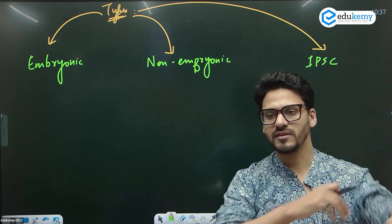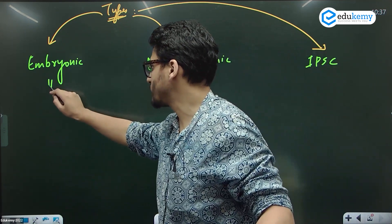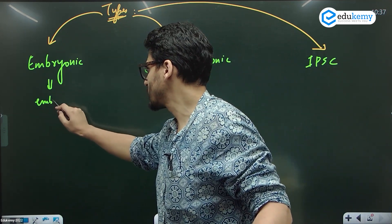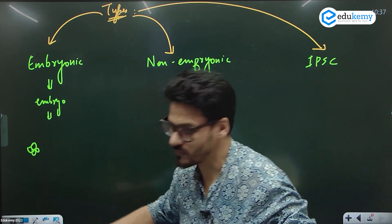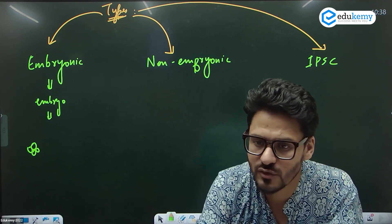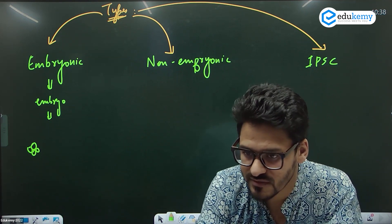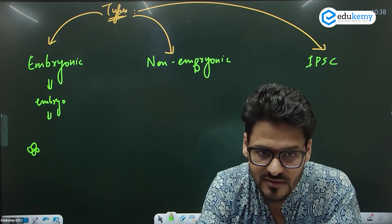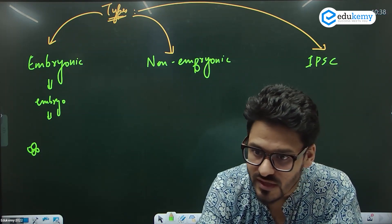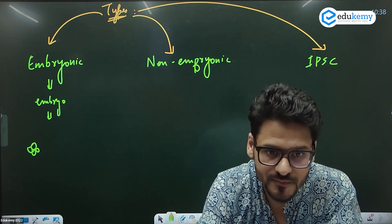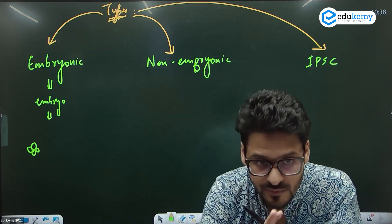Embryonic stem cells are found in the embryo. Suppose I have created this embryo — a four-cell embryo. Can you tell me: are these cells specialized? They are unspecialized, because they have not yet divided into specialized form. So all the cells in the embryo are stem cells, known as embryonic stem cells.